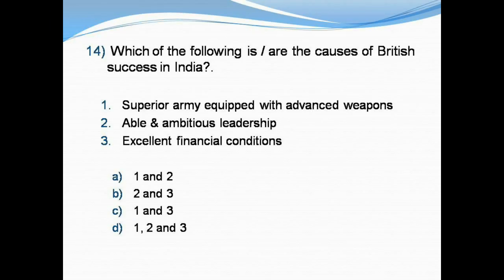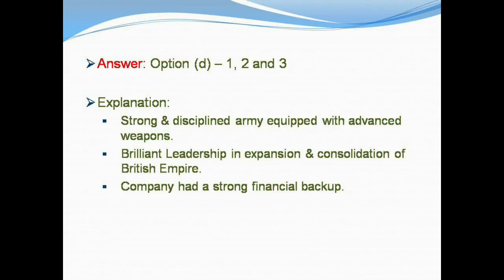Question number 14: Which of the following are the causes of British success in India? 1) Superior army equipped with advanced weapons. 2) Able and ambitious leadership. 3) Excellent financial conditions. Option A: One and two. Option B: Two and three. Option C: One and three. Option D: One, two, and three. The right answer is Option D: One, two, and three.